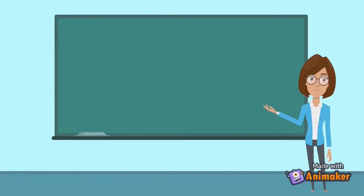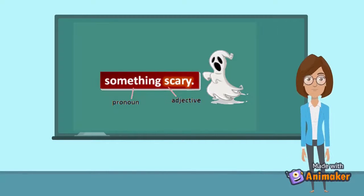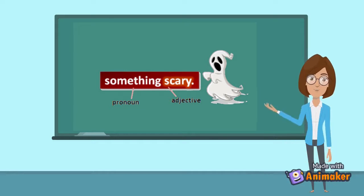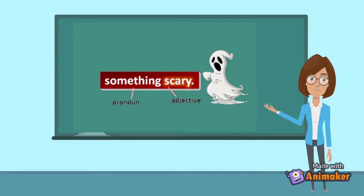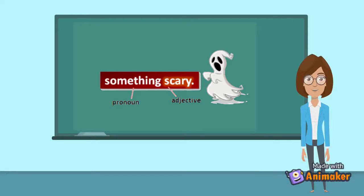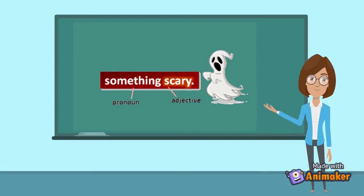And the last, adjective as a post-positive adjective. Adjectives go immediately after the noun. Post-positive adjectives are more common with pronouns. And as you can see, the difference between a predicative adjective and a post-positive adjective is the use of a linking verb. For example, something scary. Something is the pronoun, scary is an adjective.